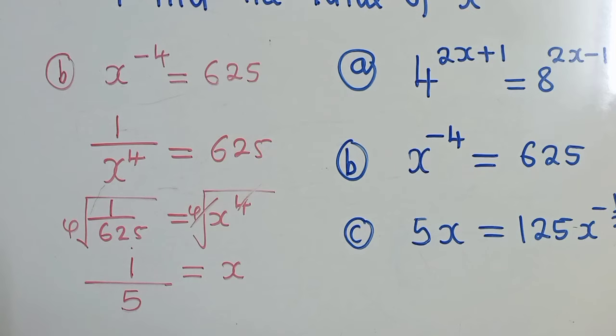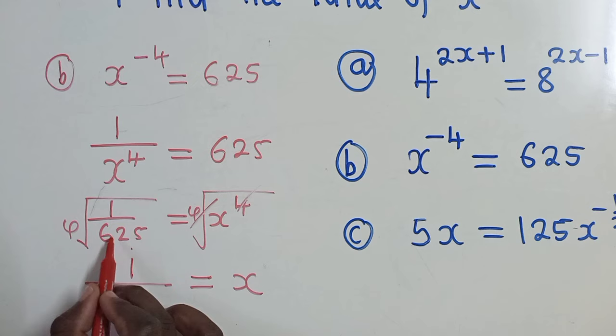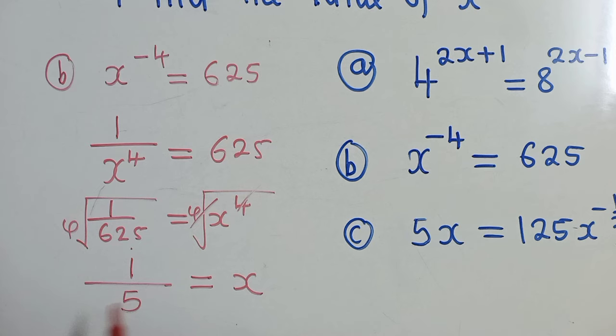Here, when I say fourth root, I'm simply referring to finding a square root of this twice. So square root of this twice, it will give us 5. Okay, so this is our solution. We now go to the last question.